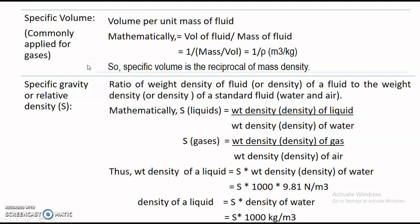The third property is specific volume. Note that this property is specially applied for gases. Specific volume is defined as volume per unit mass of a fluid. Mathematically, it is volume of fluid / mass of fluid = 1 / (mass/volume) = 1/ρ. So specific volume is the reciprocal of mass density. The unit is meter cube per kg.